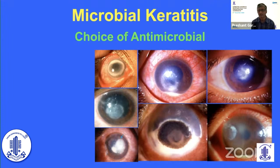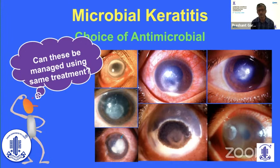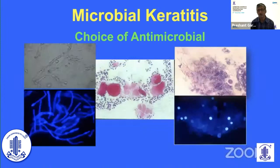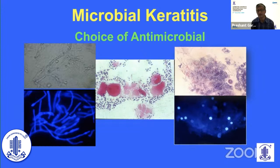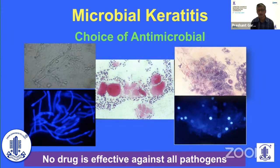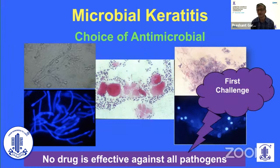Let me begin with this set of pictures from patients of corneal ulcer. If you carefully look at these pictures, I'm sure all of you will ask: can we treat all of these cases using the same strategy of management, especially the same set of drugs? The answer will be no, because corneal ulcers are caused by a variety of microorganisms — bacteria, fungi, parasites, viruses — and in some cases by immunological phenomena unrelated to any microorganism. There is no single drug or combination that can take care of all of these organisms, and this is our first challenge in the management of corneal infection.